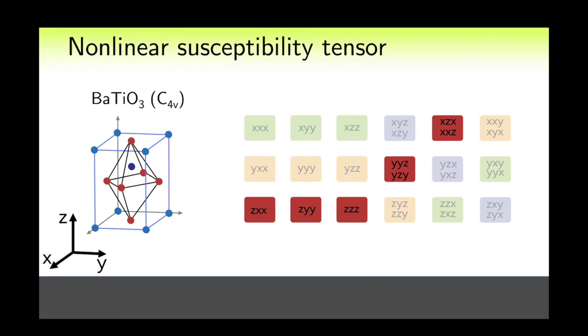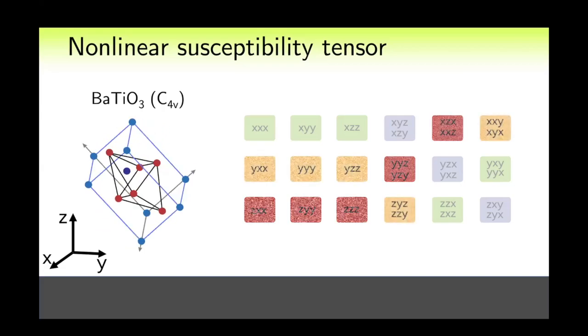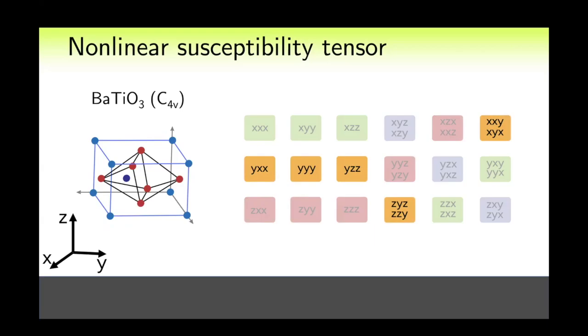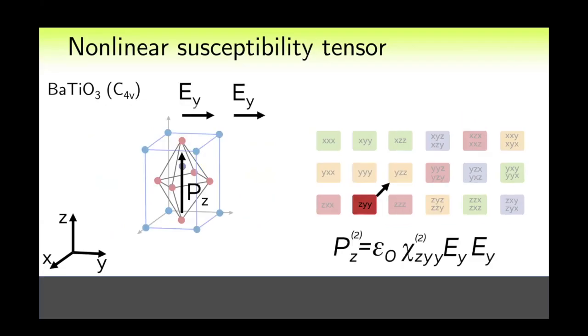How can one rotate the tensor? And what does it mean, rotating the tensor? Well, it is important to note that if we rotate the structure, the components of the nonlinearity tensor should also change. For example, in this case, the red components turn into yellow ones. Let us consider this with an example of one of the components, for instance, χ_zyy. It connects the electric field components along Y with the polarization along the Z-axis.